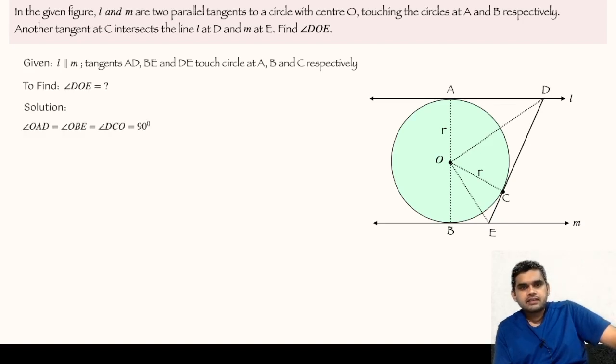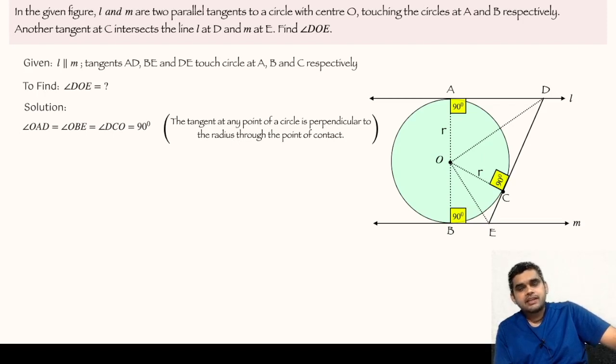First of all, we see that angle OAD, angle OBE and angle DCO as shown in the figure are 90 degrees. The reason is because of the theorem that if a tangent is drawn to a circle, then the line segment joining the center of the circle and the point of contact makes 90 degrees with the tangent. Hence these three angles will be 90 degrees.